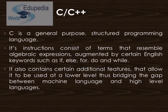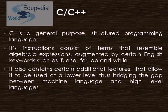Then comes C. C is a general-purpose structured programming language, meaning every program written in C consists of one or more modules called functions. One of the functions must be called main, and the program will always begin by executing the main function, which may then access other functions. Its instructions consist of terms that resemble algebraic expressions, augmented by certain English keywords such as if, else, for, do, and while. It also contains features that allow it to be used at a lower level.